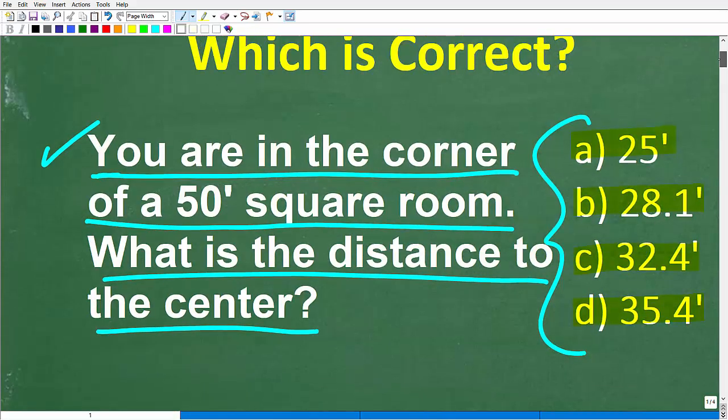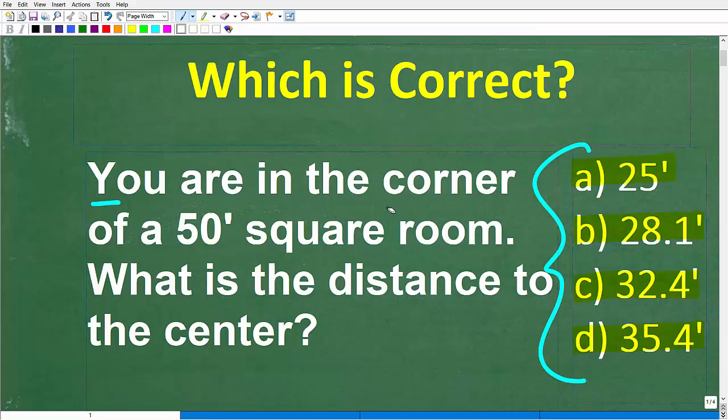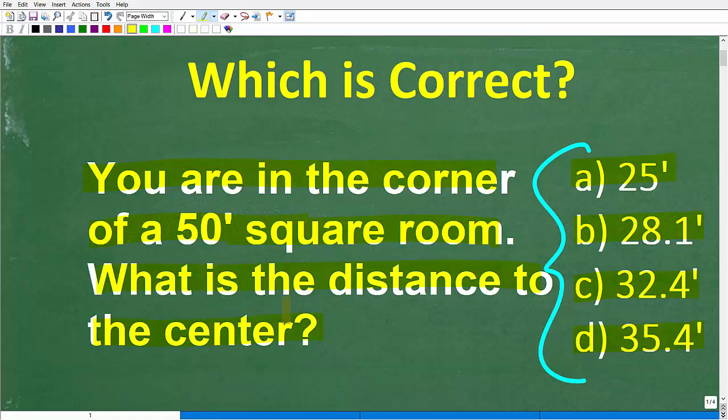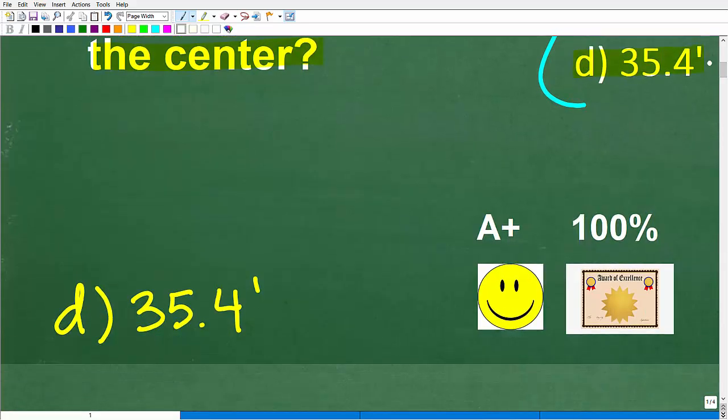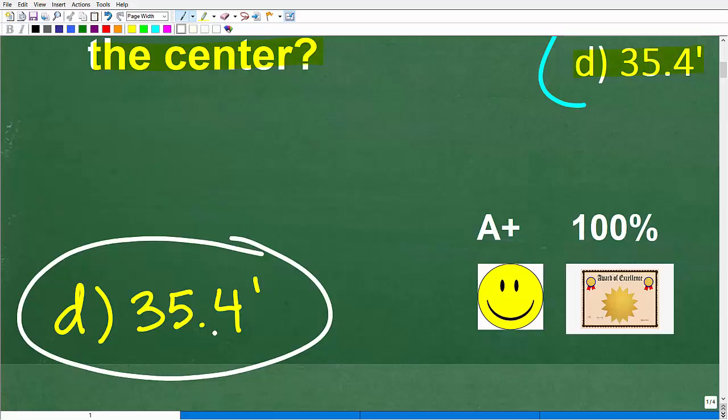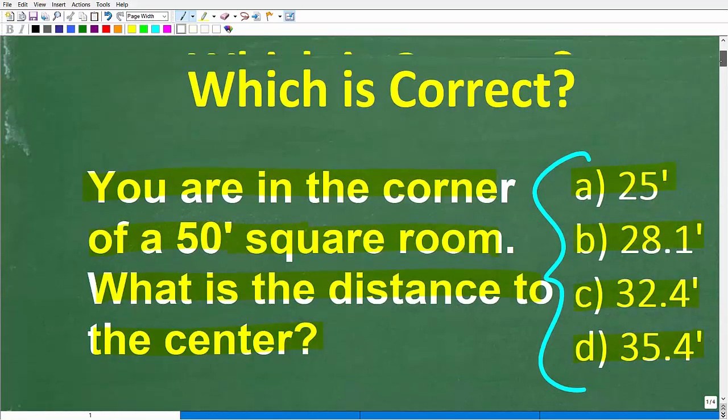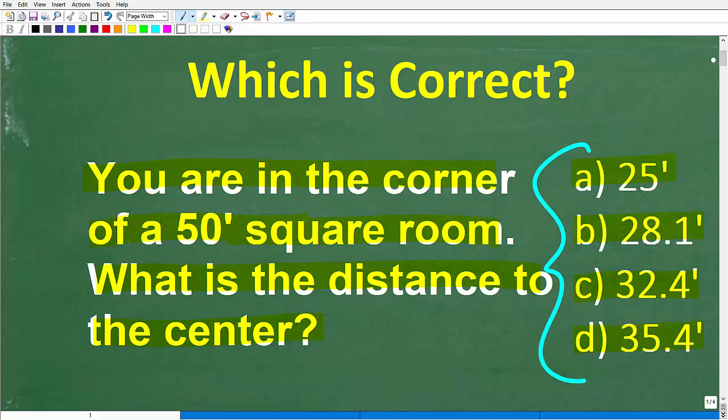Let's take one more look at the problem. Hopefully it's pretty straightforward and understandable. We are in the corner of a 50-foot square room. That's our starting position. We want to get to the center. So from the corner to the center of the room, what is the distance? Let's take a look at that answer right now. The correct answer is D, about 35.4 feet. If you got this right, you definitely get a happy face, an A plus, a 100%, and a Certificate of Excellence, because you appear to be a certified professional expert in the area of solving a right triangle word problem, because that's what we're really going to be dealing with here.